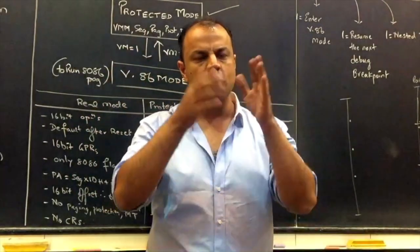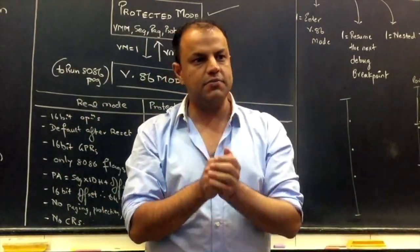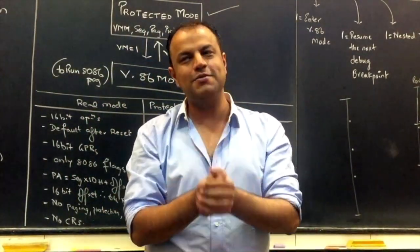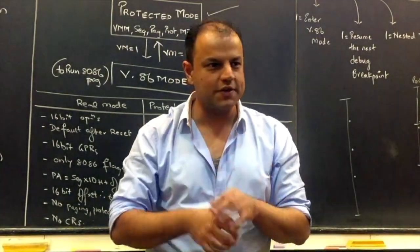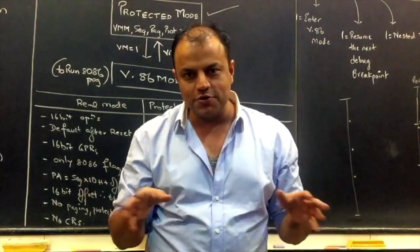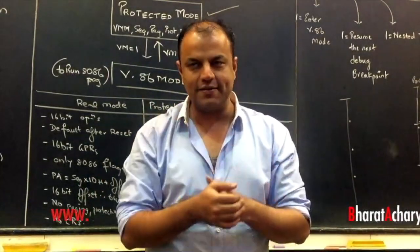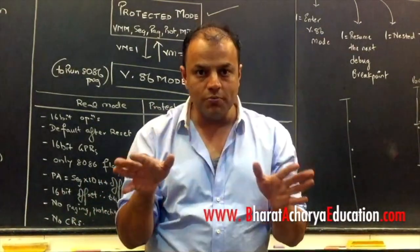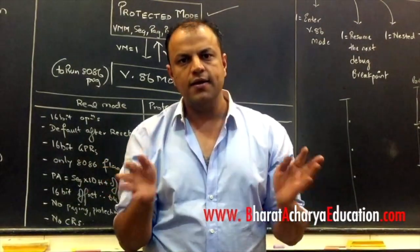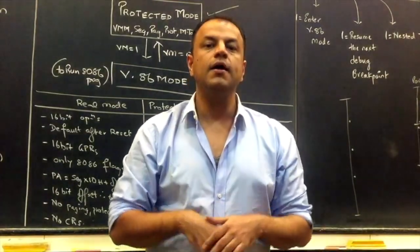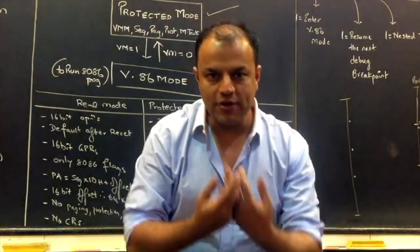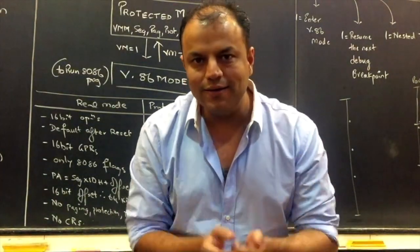It works just like 8086. All registers are still 16 bits. All operations are still 16 bits. Address translation is still the same as segment times 10 plus offset. No protection, no virtual memory management except for the basic address translation. No paging, no multitasking, nothing. It's just an 8086. Then you would say, why is this mode there? That is because protected mode cannot be entered directly.